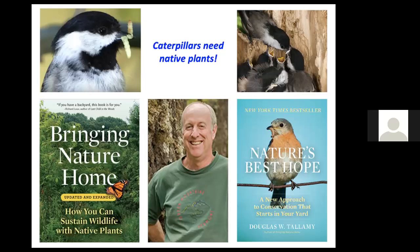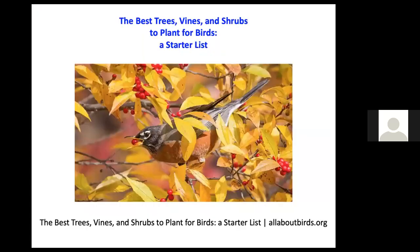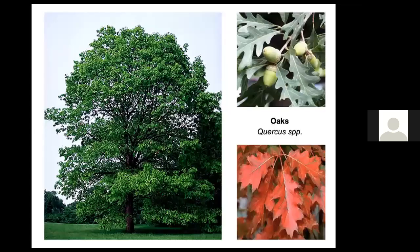His book Nature's Best Hope is about the need to think of private land as key to the salvation of birds and wildlife, since so much of our land is now in private hands. The best trees, vines, and shrubs to plant for birds — a list provided by Cornell Laboratory of Ornithology at allaboutbirds.org — includes oaks, which are fantastic because so many caterpillars visit oak leaves and birds can come and help themselves.